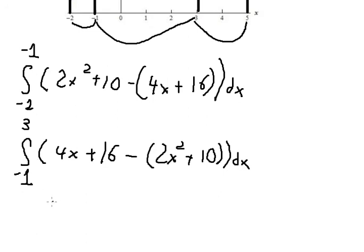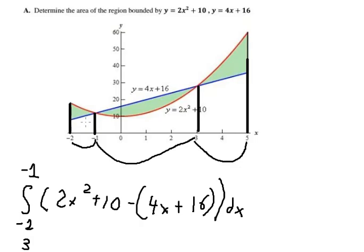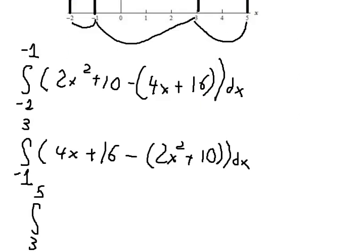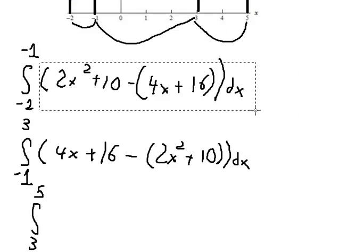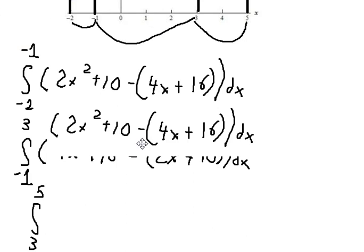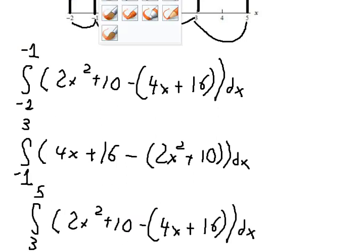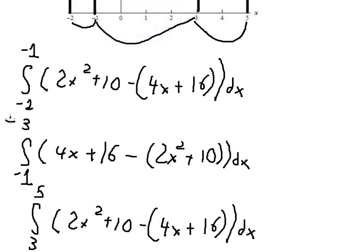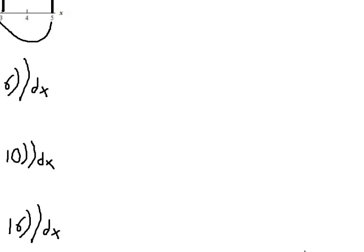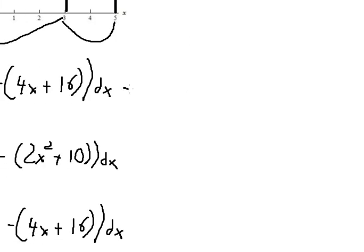For the last region, the integral from three to positive five, we can see that the red curve is above the blue line again, so we set it up similarly to the first. We then sum these three integrals together to get the final answer. I will work through just the first integral in detail.